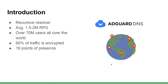AdGuard DNS is a widely used public resolver, and we estimate that about 80 million people all over the world rely on our service. But at the same time, we operate a small network with a small number of points of presence — just 16 of them at the moment. And that's why we're interested in a solution that allows us to serve accurate responses, regardless of the server location.